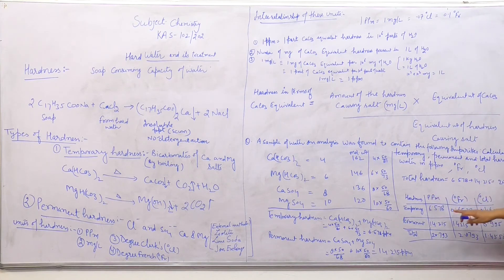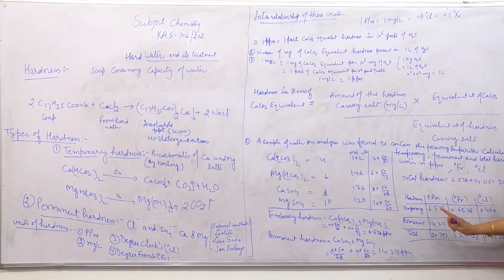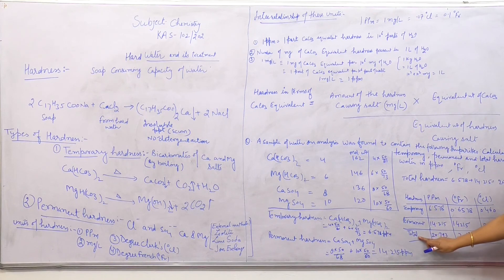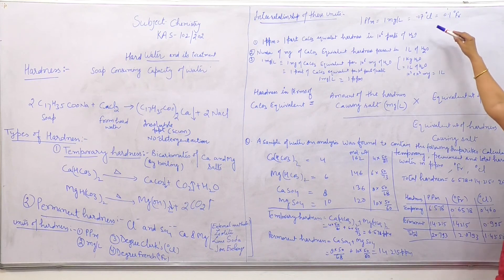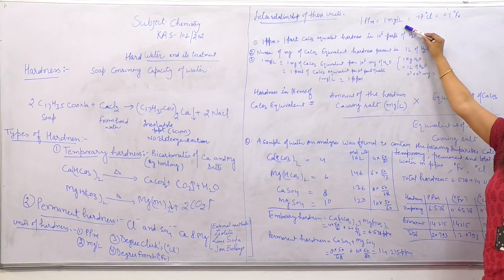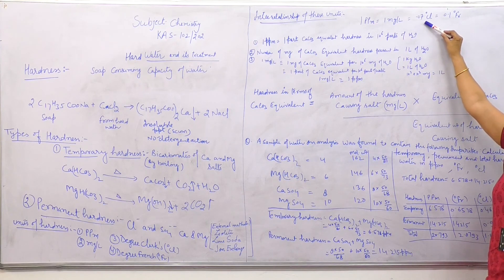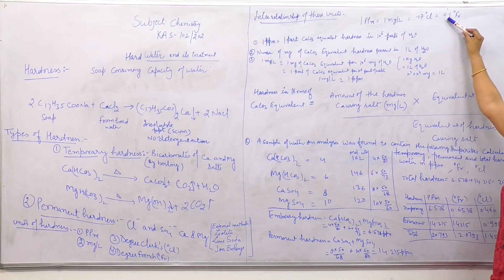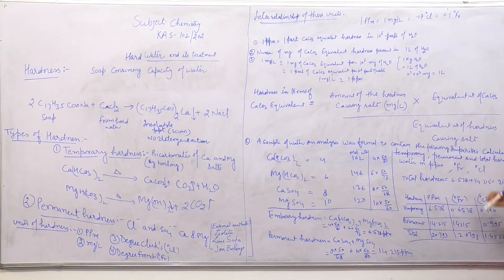Now convert all values: temporary hardness in ppm, degree French, and degree Clark. Same for permanent hardness. And for total hardness. Using the relationship: 1 ppm = 1 mg/L = 0.07 degree Clark = 0.1 degree French. After solving, we will get the total hardness in ppm, degree French, and degree Clark.